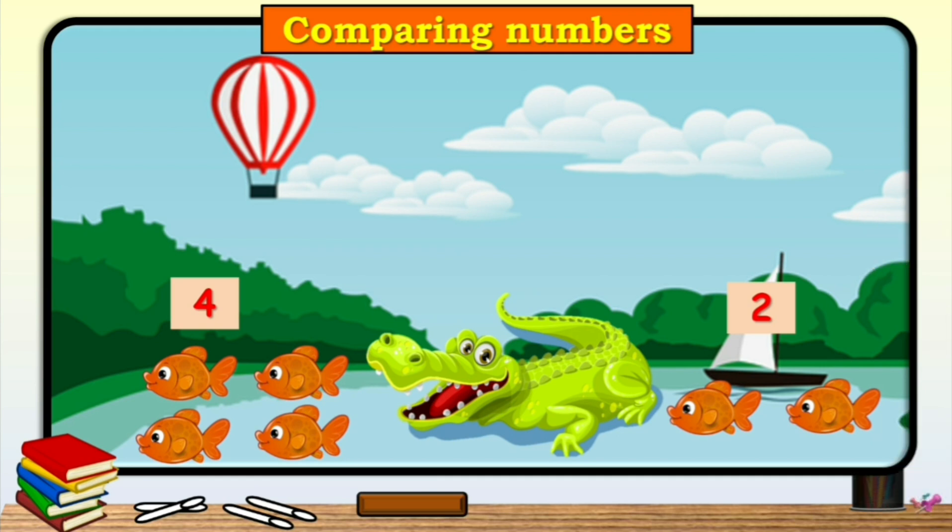Alligator thought. So, alligator opened its mouth for four fishes and turned its back towards less. So, children, here four number is greater than two.